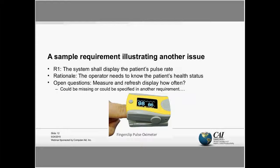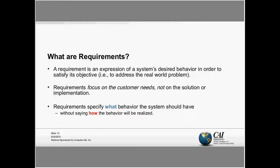What are requirements? A formal definition: a requirement is an expression of a system's desired behavior in order to satisfy its objectives and solve a world problem. Requirements focus on customer needs, not on the solution or implementation. They specify what behavior the system should have without saying how it will be realized. A common problem is that we often remember other systems we've seen and tend to specify how behavior should be implemented — but we should refrain from imposing a design on the solution and let the developers or designers handle that.